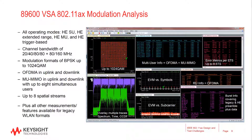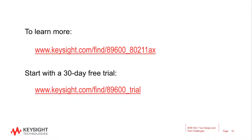In summary, the 89600 VSA software provides a comprehensive set of tools for demodulation and vector signal analysis. These tools enable you to view and troubleshoot 802.11ax chipsets and devices regardless of the operating modes implemented. To learn more and download a free trial, visit us at these websites.